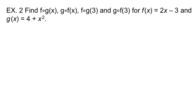So in example 2, we're going to find F of G, G of F, F of G of 3, and G of F of 3. And we have our two functions again. I'm going to use the same colors, purple for G and green for F. This time the color coding will be a little more helpful than it was in the last problem.